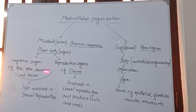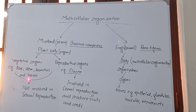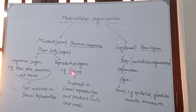Vegetative organs include roots, stem, branches, and leaves. Vegetative organs are those organs which are not involved in sexual reproduction. We can see that the root, stem, branches, and leaves will not produce any type of gametes, so that's why they are not involved in sexual reproduction.